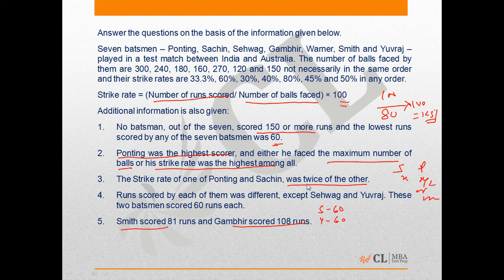Now looking at the questions, we need to identify the number of balls faced, the strike rate, and runs scored by the 7 batsmen. Let's work out the possible pairs of balls faced and strike rates. For someone to score 60 runs, the following are the possible combinations of balls and strike rate.